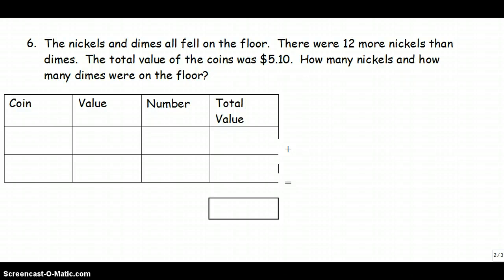Okay, now let's take a look at number 6. The nickels and dimes all fell on the floor. There were 12 more nickels than dimes. The total value of the coins was $5.10. How many nickels and how many dimes were on the floor?